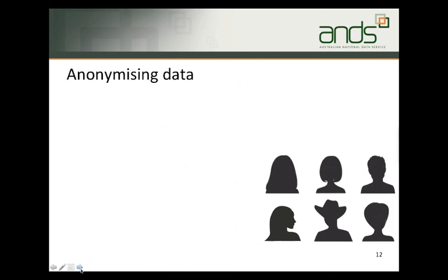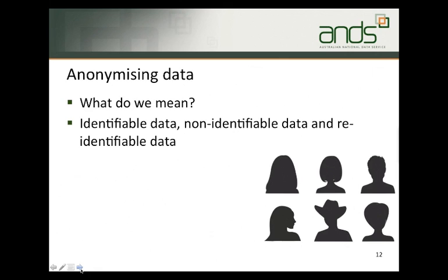Anonymising data means removing anything from the data which might identify the individual. Data can be classified as identifiable, non-identifiable and re-identifiable. Identifiable data contains information which will allow for the identity of participants to be known — for example, name, address, phone number, date of birth and so on. Non-identifiable data has been edited to eliminate or generalise any information which might identify the participants — not just taking out names and addresses, but putting the data through a broader process to generalise fields such as postcode, age or geographic location. Re-identifiable data is data which, although not immediately identifiable, contains elements which might allow someone to determine identifiers at some later time through data mining or other kinds of manipulation.